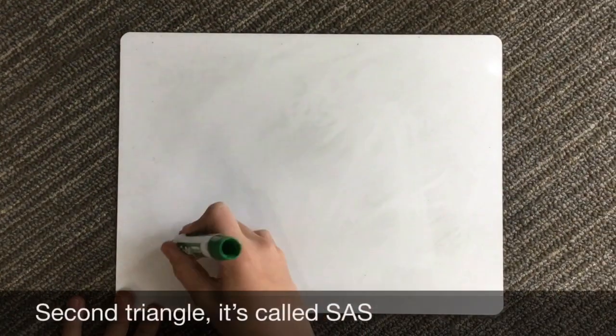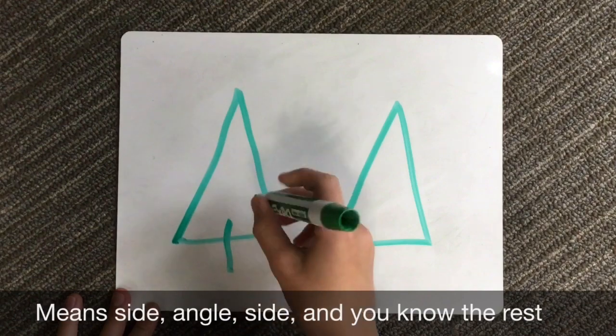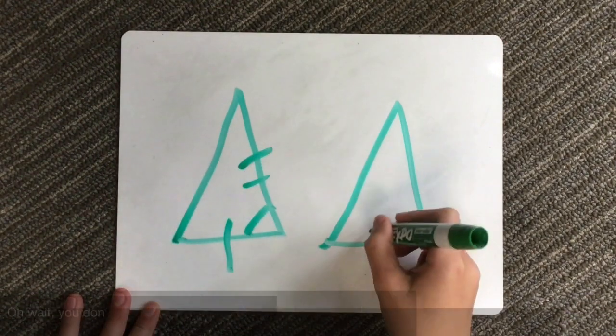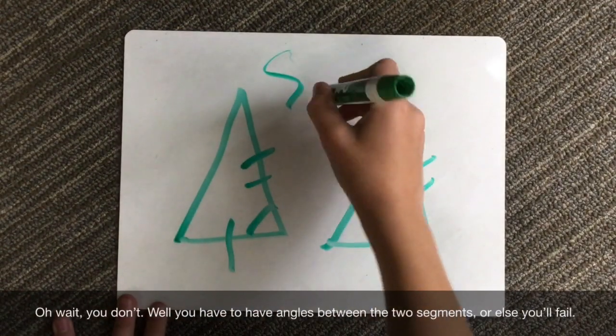Second triangle, it's called S-A-S, means side-angle-side, and you know there is a way for you, so you have to have the angle in between segments or else you fail.